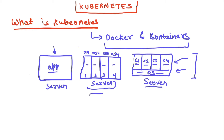This containerized infrastructure became widely popular. Many organizations, both small-scale and large-scale, are moving towards containerized infrastructure with dedicated DevOps teams. Now think about a practical organizational scenario: you won't have just four containers — you'll have a huge number of containers running multiple applications. In that scenario, you need some platform to manage your containers, and that's where Kubernetes comes into picture.